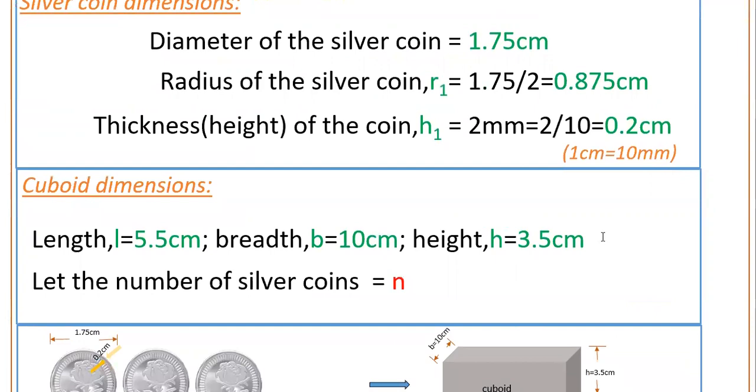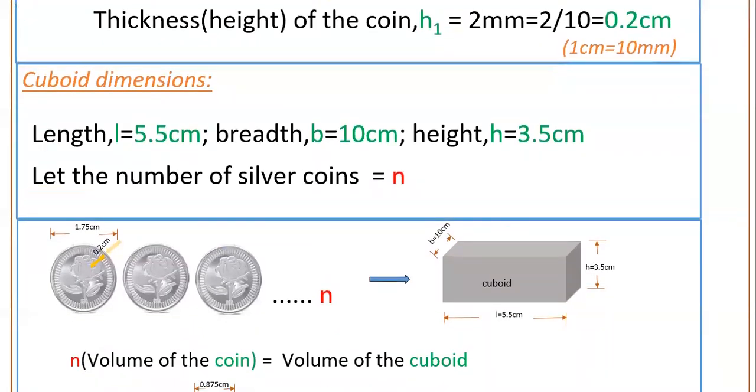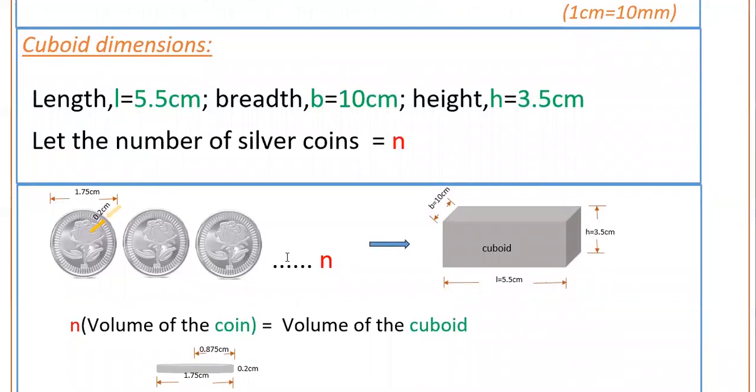So write here cuboid dimensions L, B, H and let the number of silver coins equal n. You have to find this number, where n silver coins must be melted to form a cuboid of these dimensions.